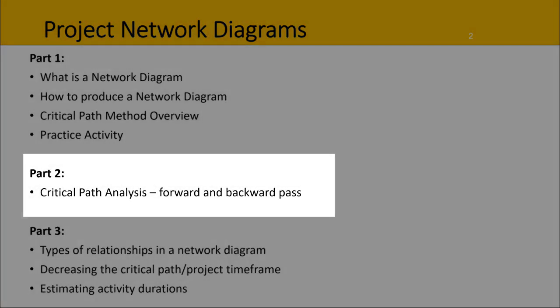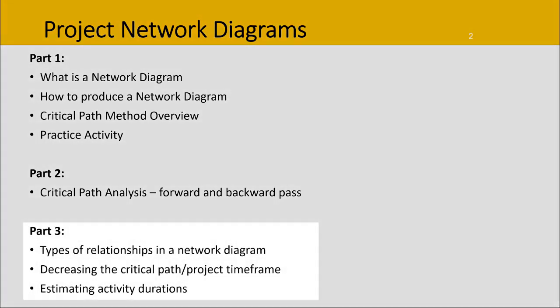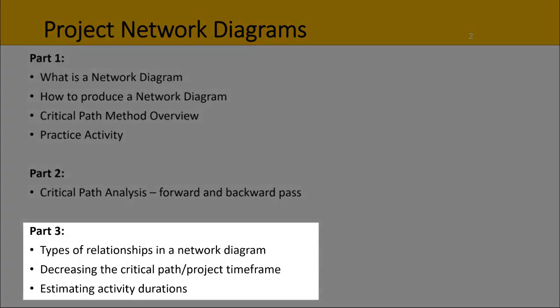In the next part we'll look a little bit more deeply into critical path analysis and how to do the forward and backward pass to determine early start, early finish time frames, and late start, late finish time frames. Then in part three we'll look at the different types of relationships in a network diagram between activities, ways to decrease the critical path or the project time frame, as well as some tips on estimating activity durations.